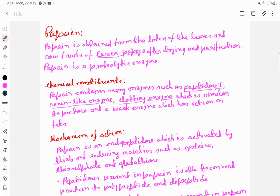We all know it as papain. After drying and purification of the latex, papain is obtained as a proteolytic enzyme. The chemical constituents of papain include many enzymes such as peptidase, renin-like enzyme, and clotting enzyme.